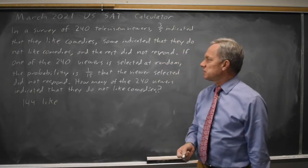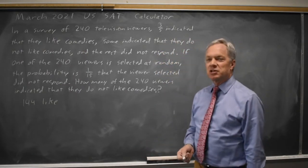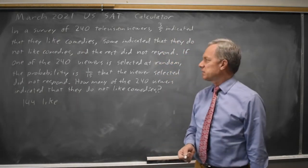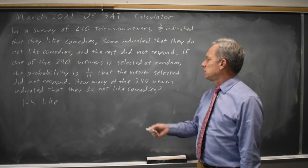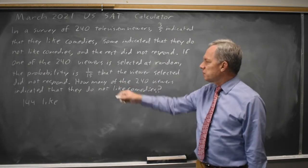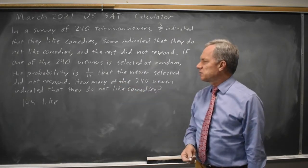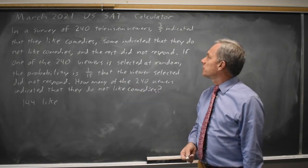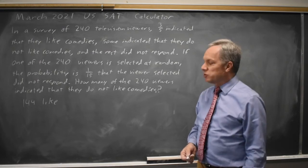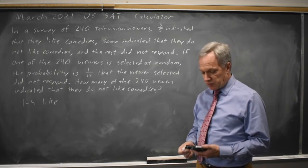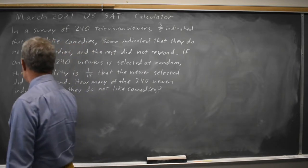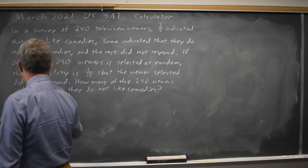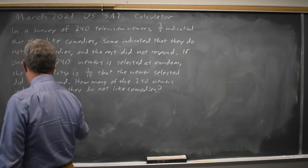Some indicated they don't like comedies, but we're not told how many that is, and the rest didn't respond. If 1 out of 15 did not respond, and 1 out of 15 from 240 is 240 over 15, which is 16, did not respond.